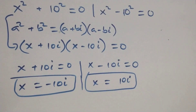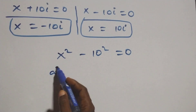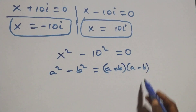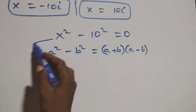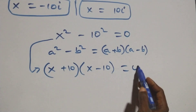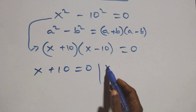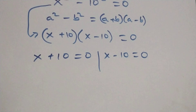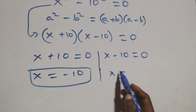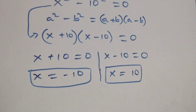From the second case, x squared minus 10 squared equals zero. This also follows the identity a squared minus b squared equals (a + b)(a - b). So this becomes (x + 10)(x - 10) equals zero. We have two possible cases: x plus 10 equals zero, giving x equals minus 10, which is a real solution; or x minus 10 equals zero, giving x equals 10, which is also a real solution.